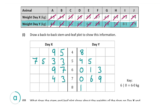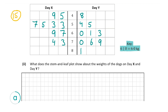And that's our answer for the back-to-back stem and leaf plot in part A1. One other thing: you must include a key. The key has been done for us here, but most of the time it won't be, so don't forget to include the key or you will lose marks. That was worth 15 marks. Now part A2 asks: what does the stem and leaf plot show about the weights of the dogs on day X and day Y?